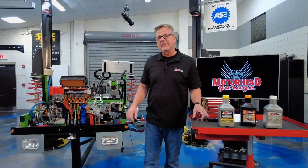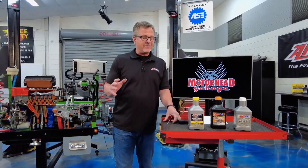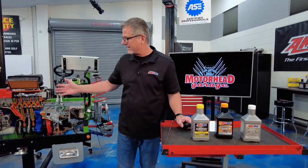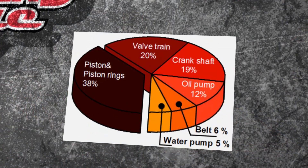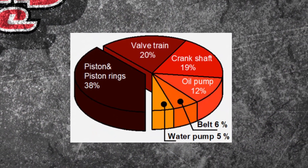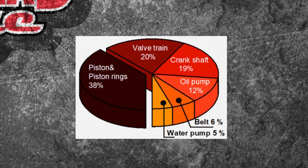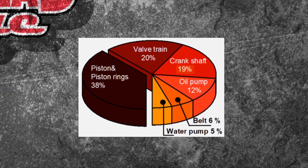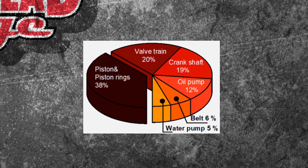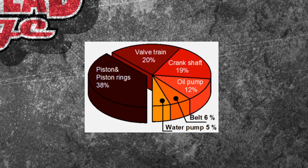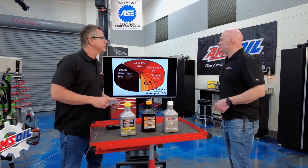You heard that one squeaking a little bit, and it's spinning at electric speed — which is nothing. These things go 5,000 RPMs. Just imagine that, and what the oil has to do. There's also frictional loss in all those bearings. That 100% loss breaks down like this: piston rings account for 38%, valve train 20%, crankshaft 19%, oil pump 12%, and so forth. More frictional loss means less horsepower.